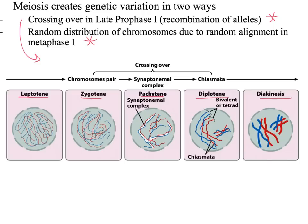In leptotene, this is the very beginning of late prophase I, where we're really seeing those chromosomes condensing and the nuclear envelope is starting to break down a little bit. In zygotene, further condensing is occurring, but this is where the chromosomes are actually pairing — so it's in zygotene that we have synapsis, the pairing of the homologous chromosomes.